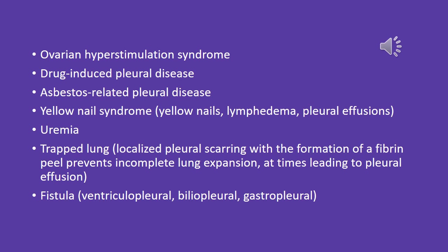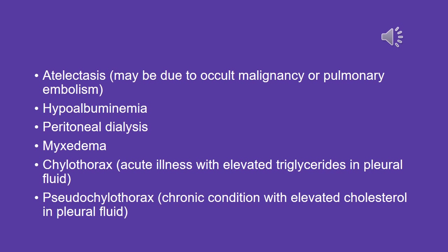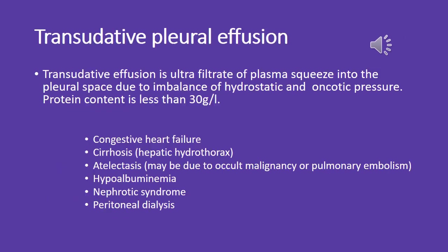Further uncommon causes include yellow nails, lymphedema, pleural effusions, uremia, trapped lung fistula, atelectasis — which may be due to occult malignancy or pulmonary embolism — hypoalbuminemia, peritoneal dialysis, myxedema, chylothorax, pseudochylothorax, and transudative pleural effusion.